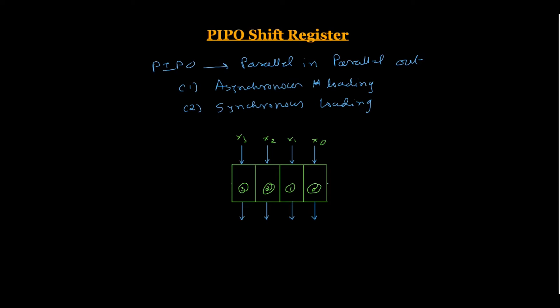In asynchronous loading, we use the preset as well as the clear input. The preset and clear inputs are asynchronous controls of a flip-flop, as we already know. With the help of preset and clear, we can transfer our input data to the shift register. When we apply preset as high and clear as low, then x3, x2, x1, and x0 are transferred into the shift register.